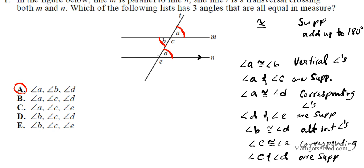Another pair of congruent angles is angle C, which is congruent to angle E. C and E are obtuse angles — the only obtuse angles — while the others are all acute and all congruent. So the answer to number one is A.